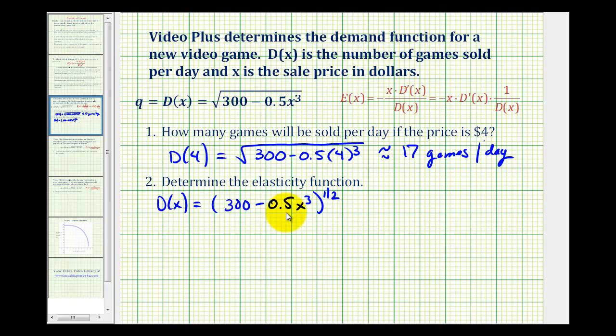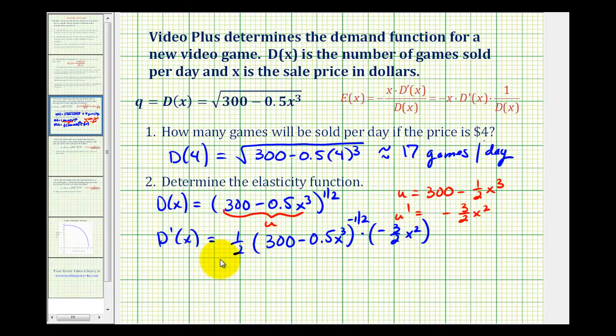Now let's determine the derivative of the demand function. Notice we have a composite function. So u is going to be equal to 300 minus, I'm going to put 1 half x to the third. So u prime would be negative 3 halves x squared. So the derivative of the demand function would be equal to the derivative of u to the 1 half or 1 half u